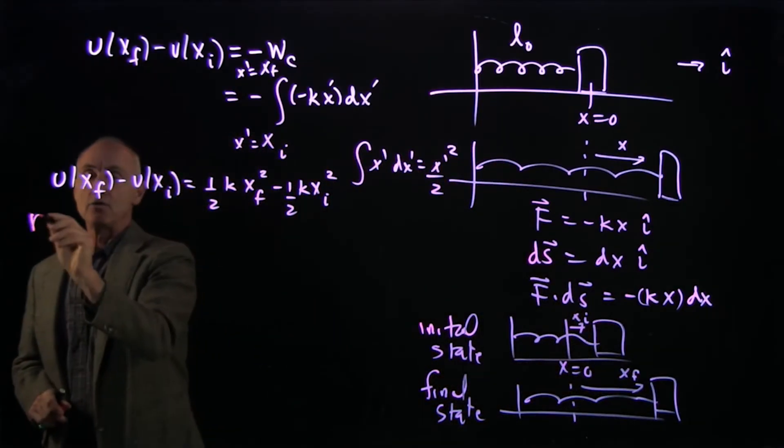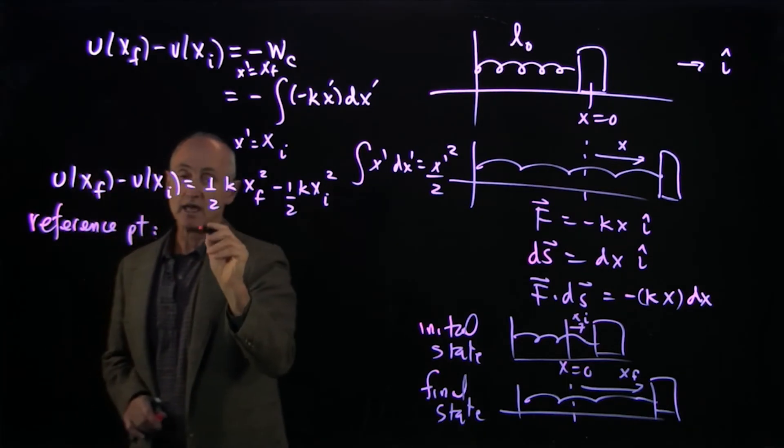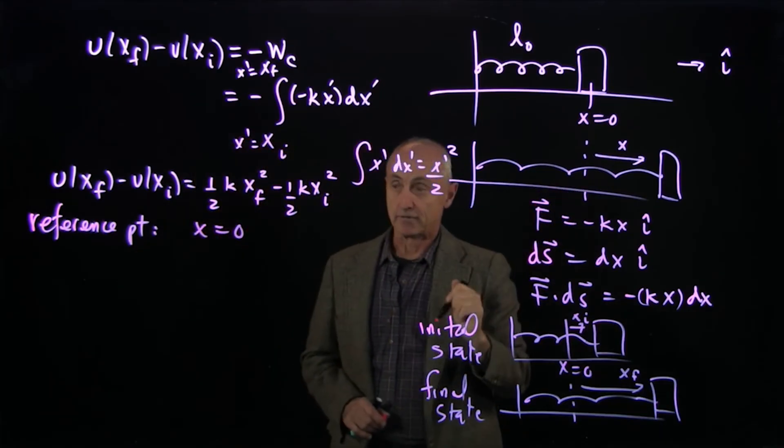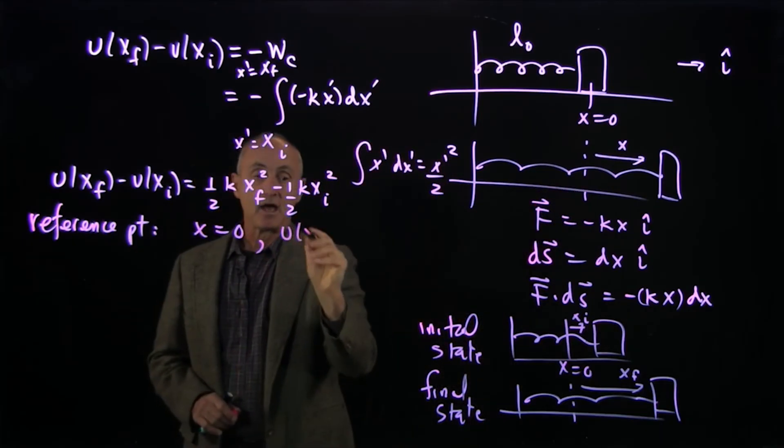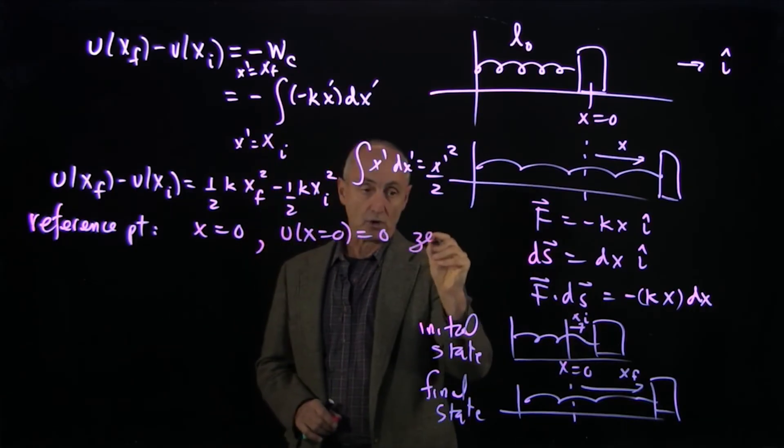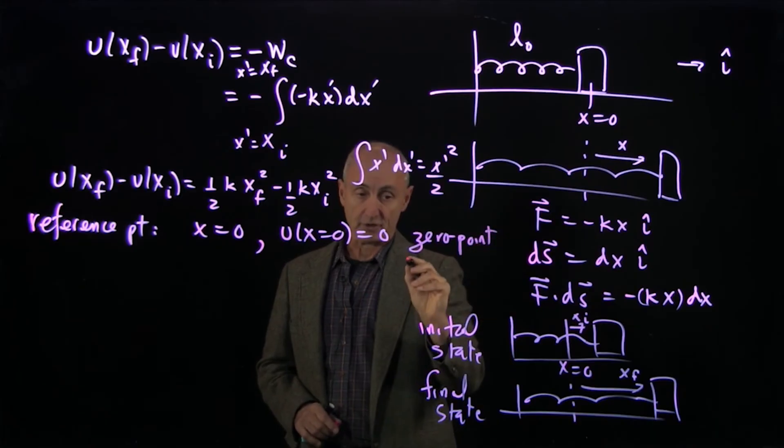Now, you may have already thought about it, but the reference point that we're going to use is x equals 0, the unstretched length of the spring. And our reference potential at that point will be 0. So our reference point is actually the 0 point for the potential.